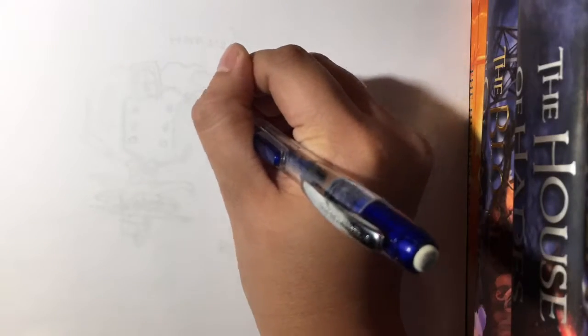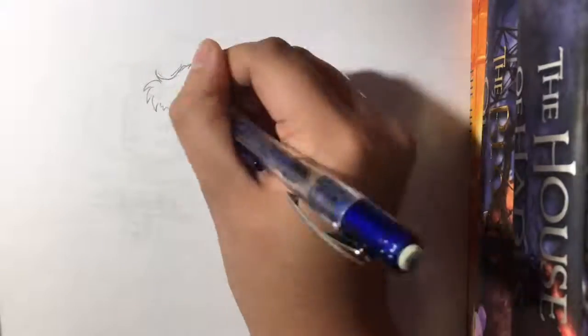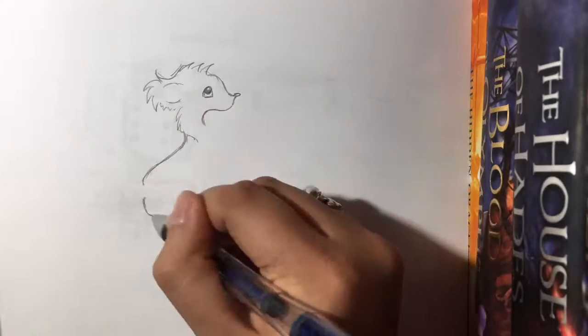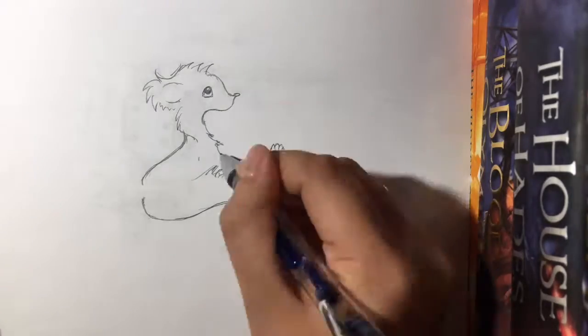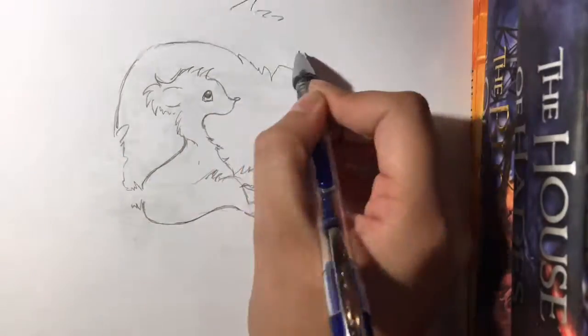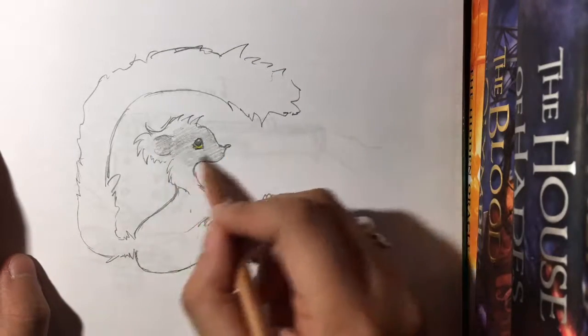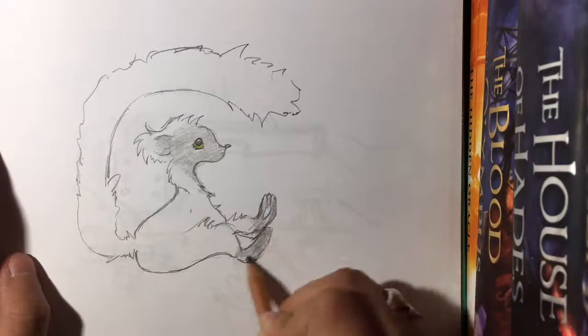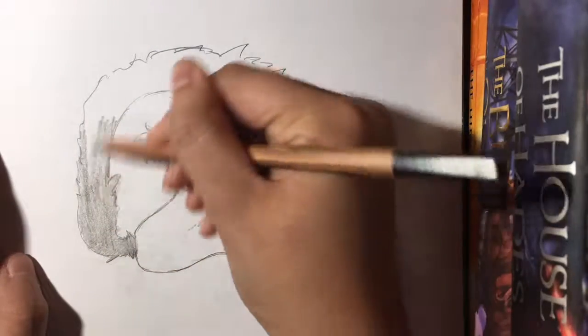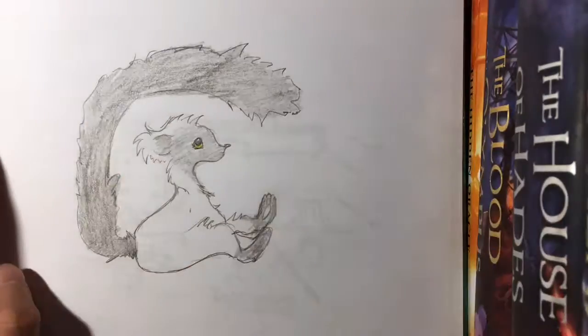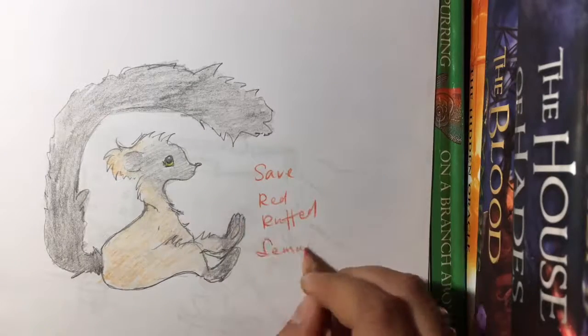Despite the bleak outlook for ruffed lemurs, conservationists have implemented many strategies to try to protect these species. Corridors have been built between forest fragments to increase rainforest connectivity and help maintain genetic diversity. Additionally, a program at the Betampona Reserve has released captive black and white lemurs back into the wild to bolster genetic diversity and demographics of wild populations, and is widely considered successful. With research, education, and conservation, ruffed lemurs can be preserved for generations to come.